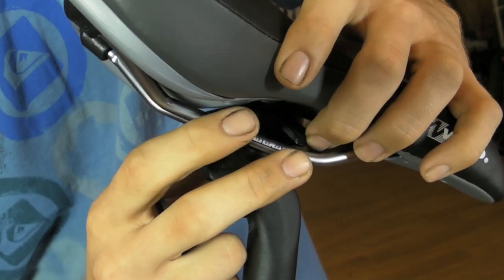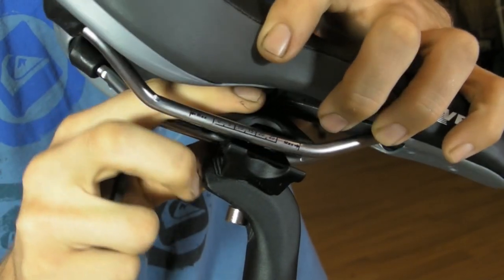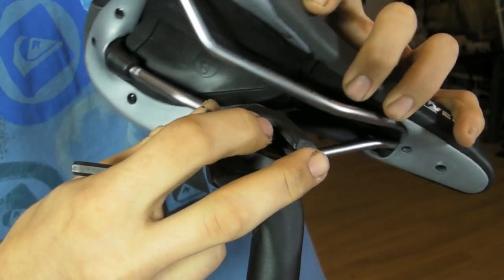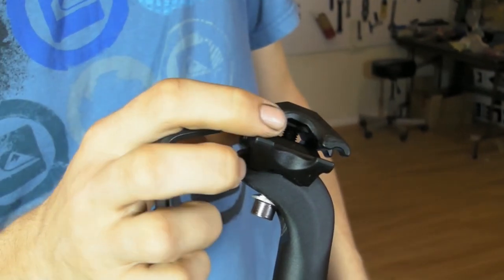And to get the saddle off, some of these are a little bit tricky. You want to get one side first, and then the other side should come off. Now your saddle is removed, you just have the rails exposed.